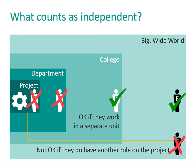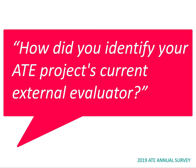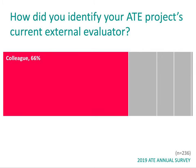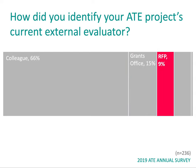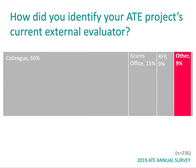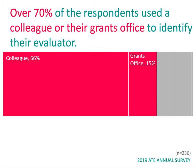Now that we know who counts as independent, how do we locate qualified independent evaluators? As evaluators ourselves, we like to ask the data. To get a better sense of how ATE projects are obtaining their evaluators, we asked ATE PIs how they identified their current external evaluator on the 2019 annual ATE survey. Here is what 236 current ATE PIs said: 66% asked a colleague for a recommendation or selected someone they had worked with before; 15% used their grants office; 9% issued a request for quotes or proposals; 9% described other methods such as meeting an evaluator at a conference; and less than 1% used an evaluator directory. The big takeaway is that over 165 current ATE PIs used a colleague or their grants office to identify their external evaluator — so keep this in mind when you're looking.